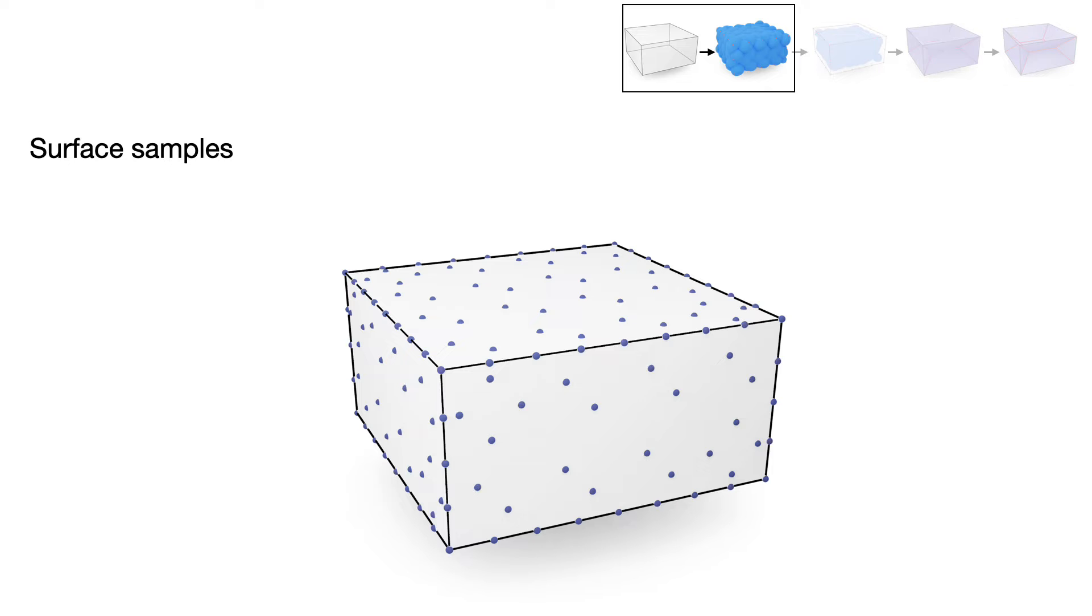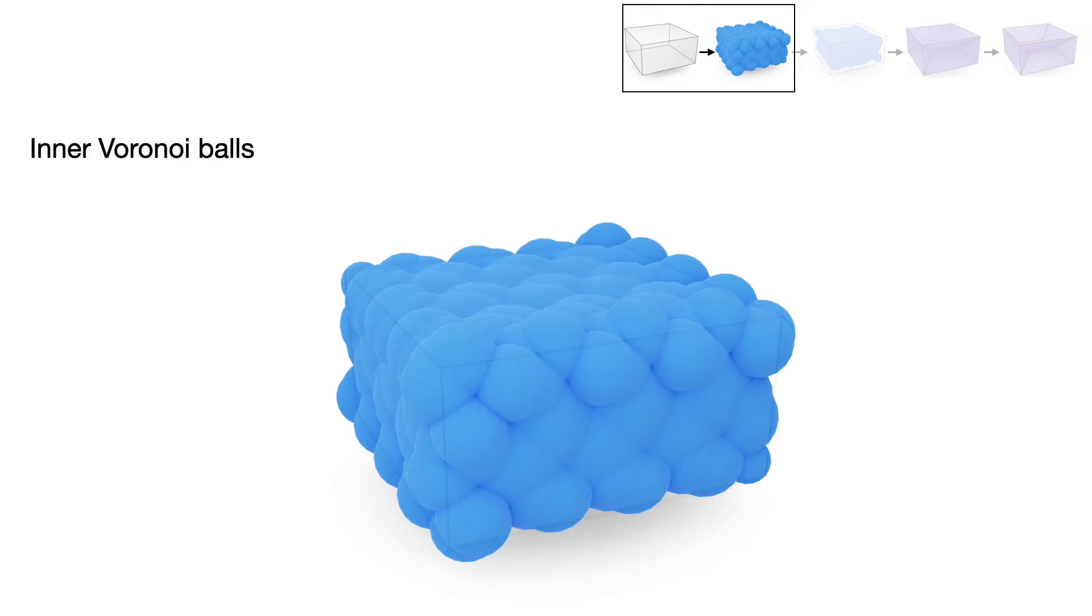After placing surface samples, the sphere candidates on non-feature regions are inner Voronoi balls generated with Delaunay triangulation of surface samples.